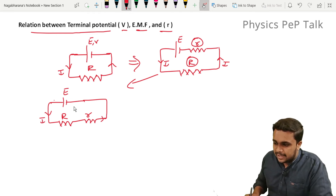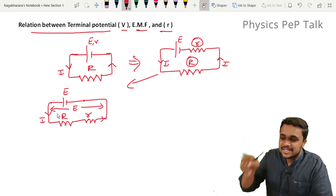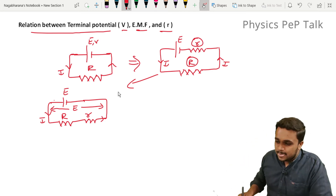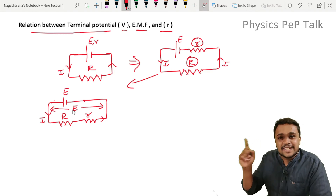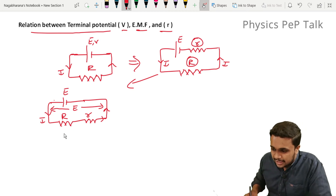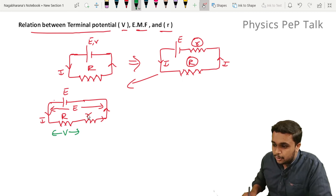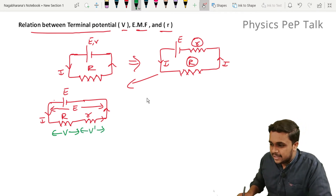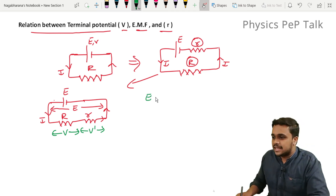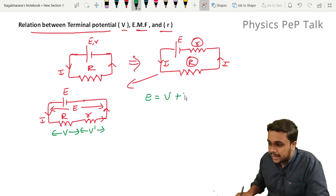The potential applied across these two combinations is E — the EMF of the cell. Before connecting the external load, the potential across the terminal was equal to the EMF of the cell. In a series combination the voltage across each component varies while current remains the same. Let me call the potential across the external resistor as V, and the potential across the internal resistance as V dash.